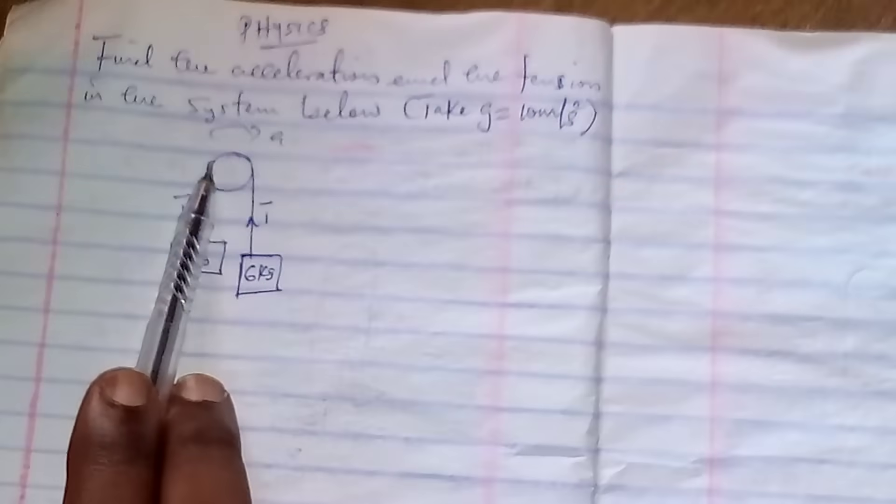So looking at the system, you discover that there are two masses hung through a pulley with the aid of a string. The direction of this system will move toward the 6 kg in this direction.